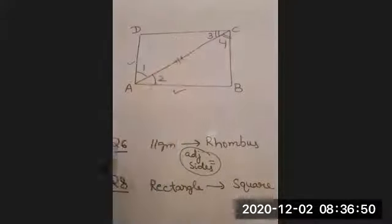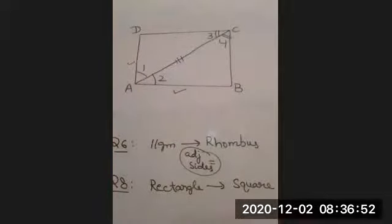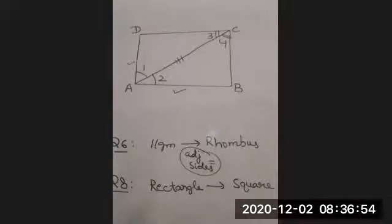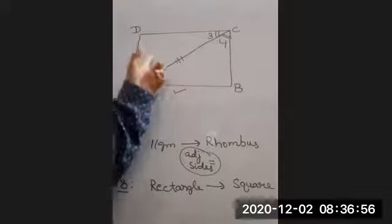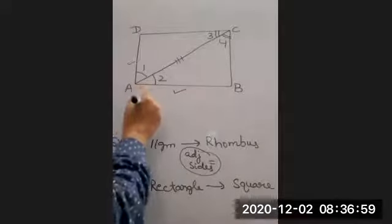AC is equal to AC, given. So do we have these two triangles congruent? Yes.